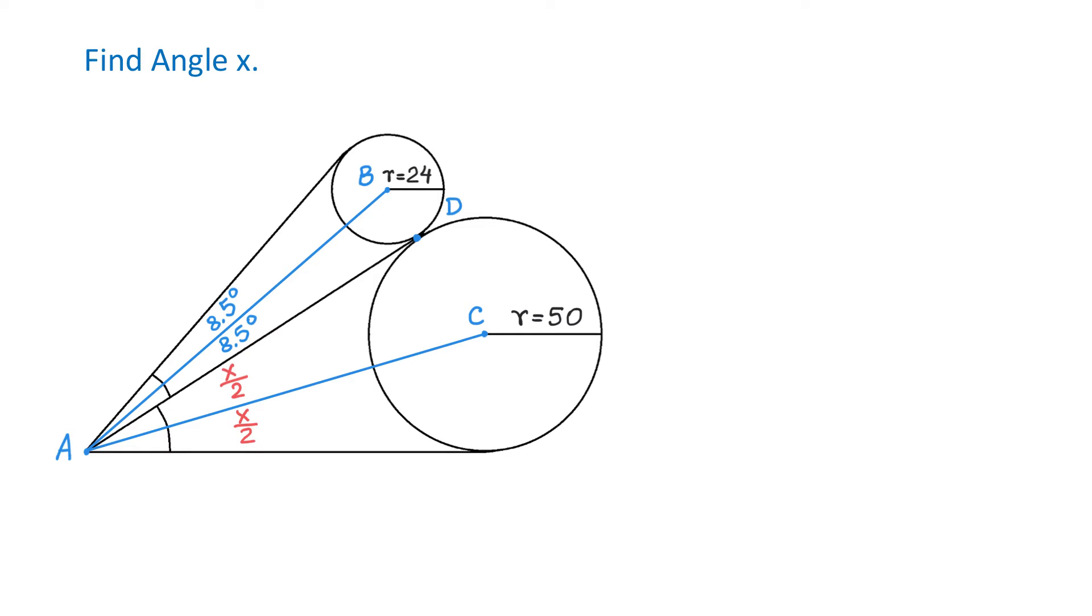Next we will connect the points B and D. Then BD represents the radius of this circle and it is perpendicular to AD because in a circle the radius is perpendicular to the tangent line at the point of tangency. Now we have a right triangle ADB.